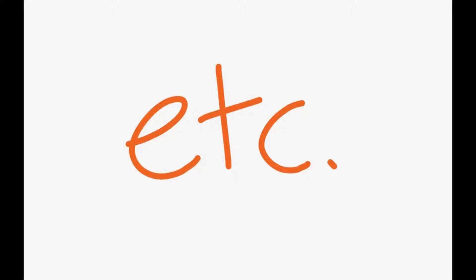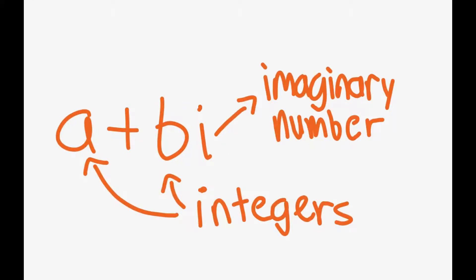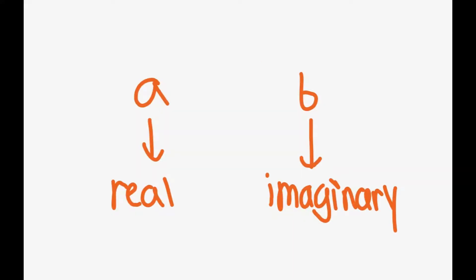However, the form of Gaussian integers is much different than normal integers. Gaussian integers consist of all the complex numbers a plus bi, where a and b are integers. We call a the real part, and b is the imaginary part.